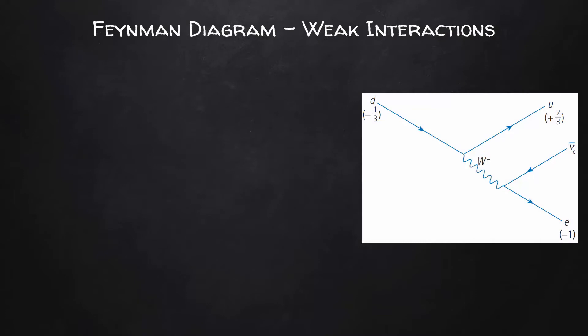Here's an example of beta decay as represented by a Feynman diagram. A down quark enters the interaction and then emits a W minus boson. If a particle that starts off with a negative one-third charge loses negative one charge, it becomes positive two-thirds charge. This is the charge of an up quark which we can see leaving the first part of this interaction.